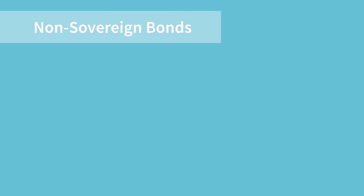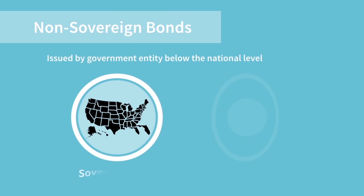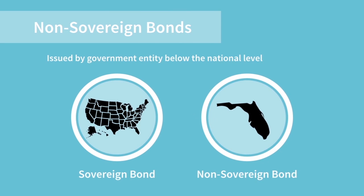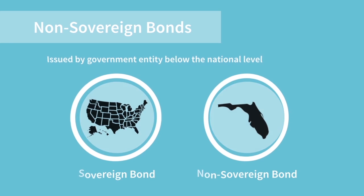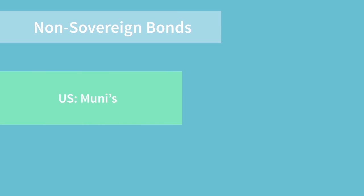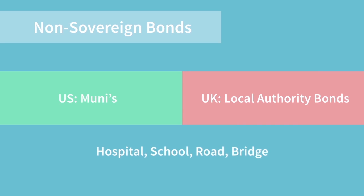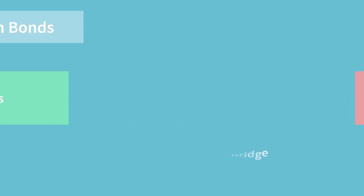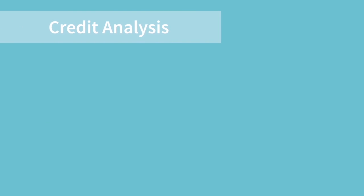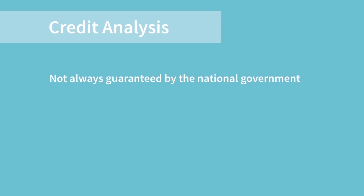Non-sovereign government bonds are issued by government entities below the national level. In the US, we would be looking at municipalities, who issue bonds called municipal bonds or munis. In the UK, non-sovereign bonds are called local authority bonds. They are usually issued to finance a local project such as a hospital, school, a road, or a bridge. In terms of credit analysis, it's important to note that non-sovereign bonds are not necessarily guaranteed by the national government — this may be the case, but it's not always the case.